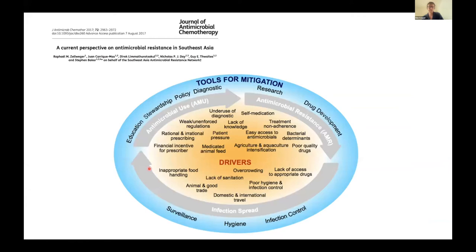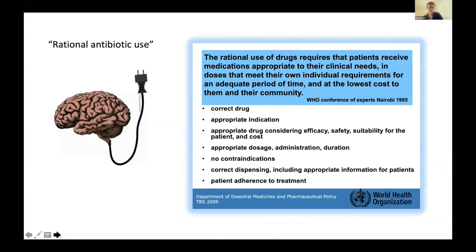One thing people often talk about is rational and irrational antibiotic use. I'm slightly uncomfortable with this term — it implies that if only people could be more rational, we wouldn't have this problem. The WHO definition is giving people the drugs that meet their clinical needs in the right dose for the right duration, and crucially at the lowest cost to them and their community. One of the issues with antibiotic use is that the interests of the patient and the community are not necessarily aligned.